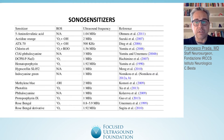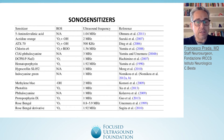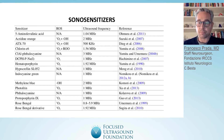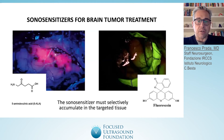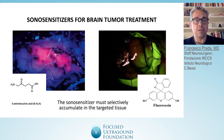Many different sensitizers have been tested pre-clinically for glioblastoma treatment. We are focusing our attention towards those already used in a clinical setting, such as 5-aminolevulinic acid (5-ALA), indocyanine green, and fluorescein. Here you can see a couple of examples — 5-ALA on the left and fluorescein on the right — while they're used to highlight glioblastoma intraoperatively.